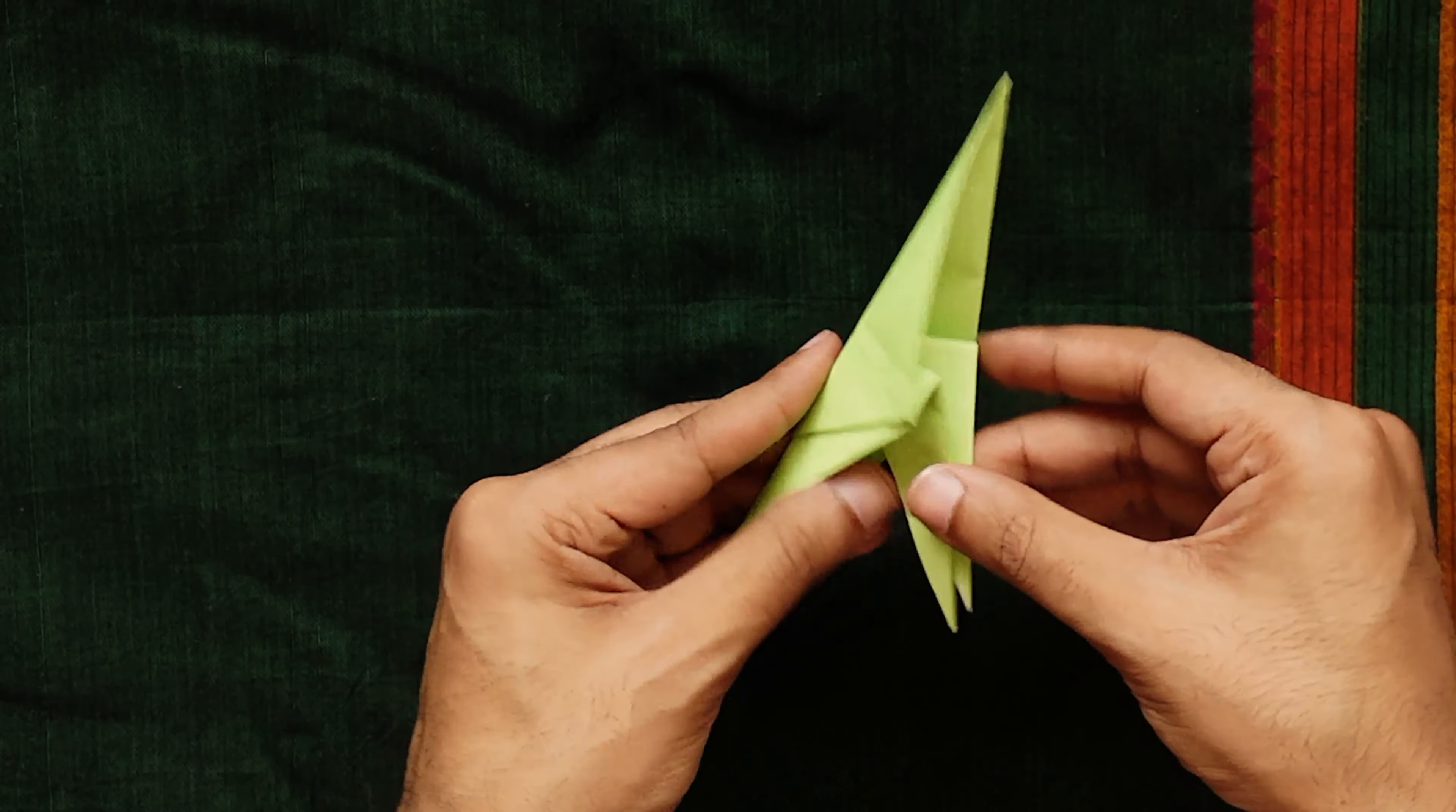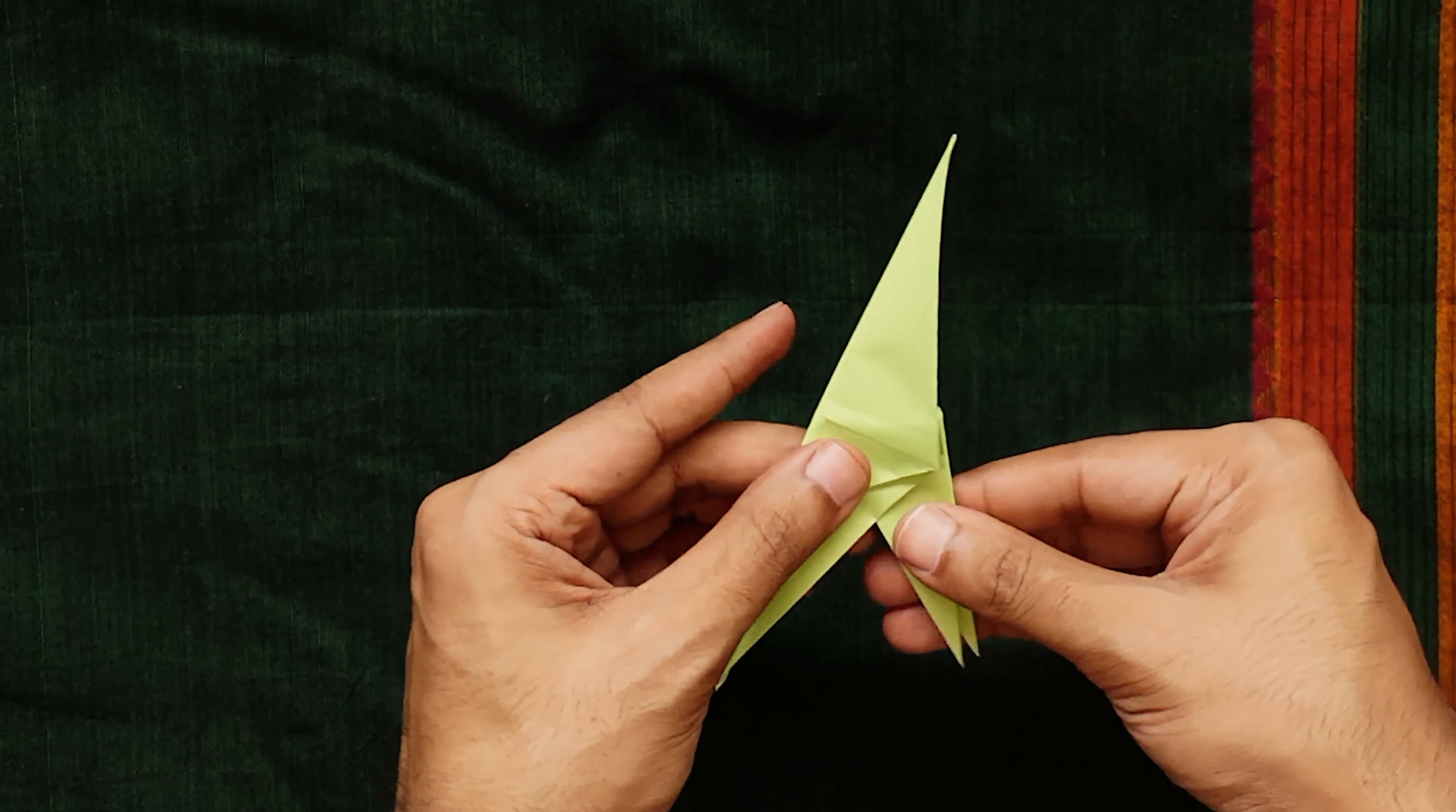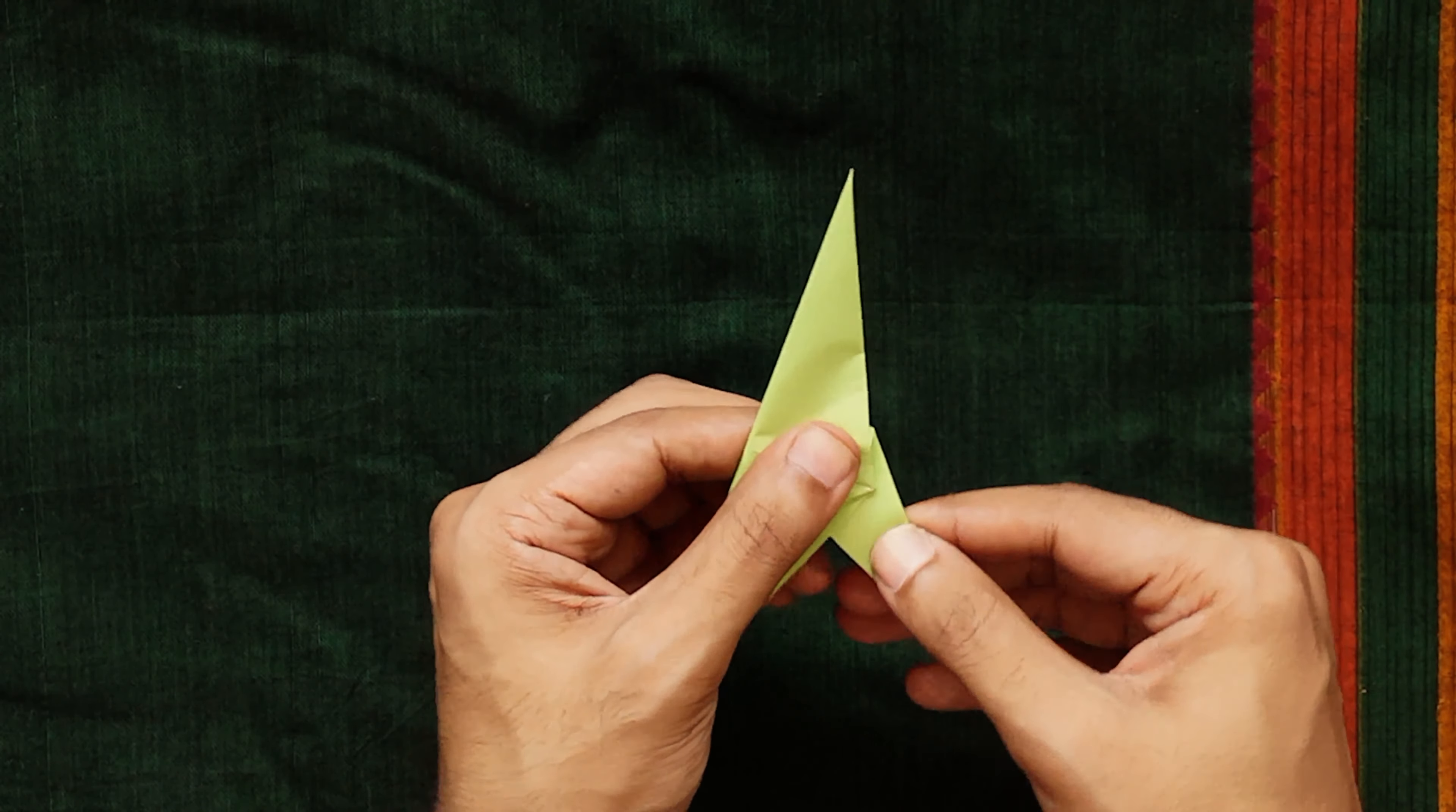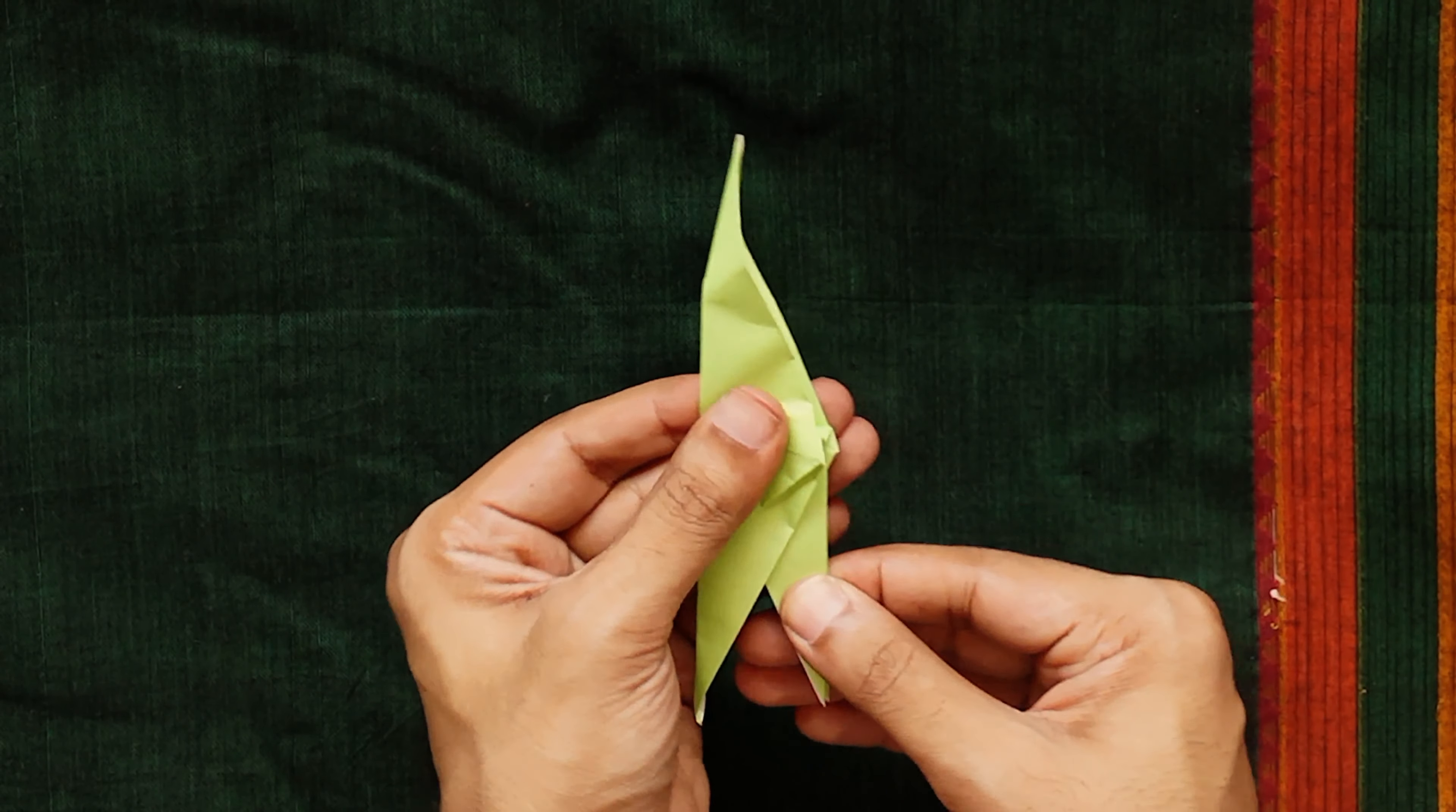If you open up the central fold along the crow's body, that's what the two legs will look like. Fold it back down in half again and now create a head by inside reverse folding the pointed stalk of the head.